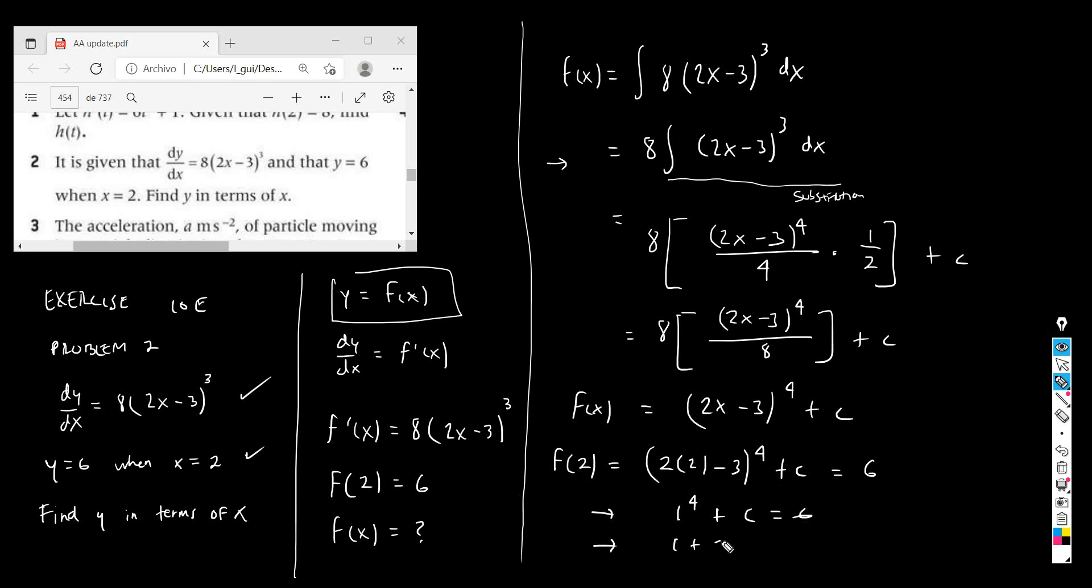And that means that 1 plus c equals 6, and that means that c equals 5. So the final answer is that the function f is going to be (2x minus 3) to the 4 plus 5, because c is 5. There you go.